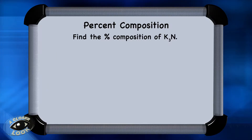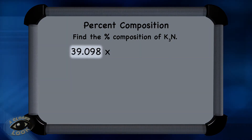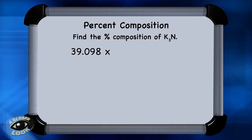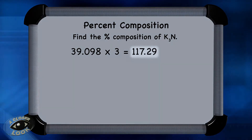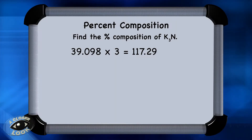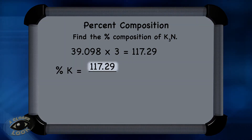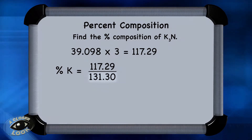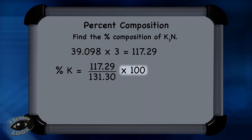Here's another problem in which you're asked to calculate percent composition — this time, potassium nitride. From the periodic table, you get the molar mass of potassium at 39.098. In this compound, there are three potassiums in the formula, so multiply 39.098 times 3, which is 117.29 — the mass contribution of potassium. To calculate the percentage, take 117.29 over the total mass of the compound, which is 131.30, divide, and multiply by 100 to get 89.33% potassium.